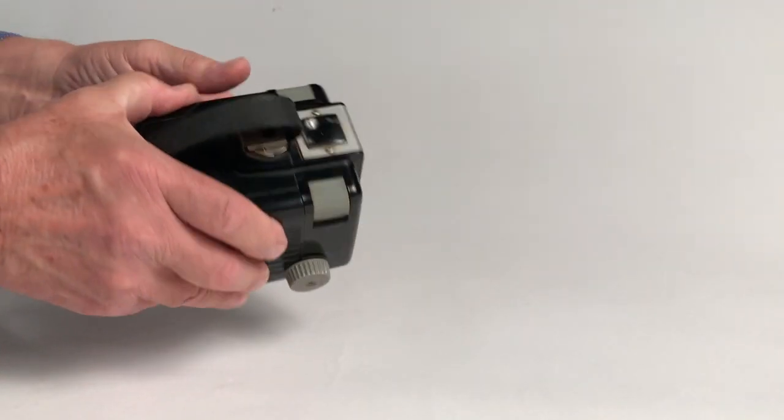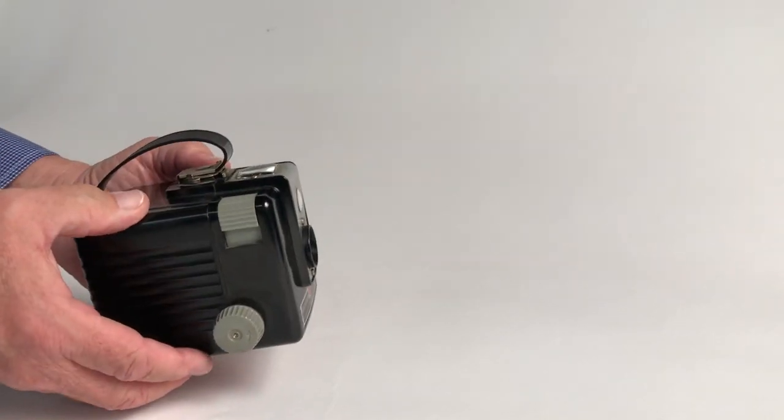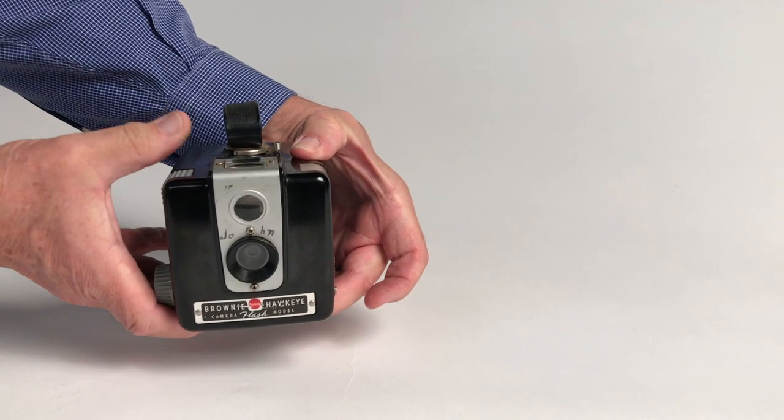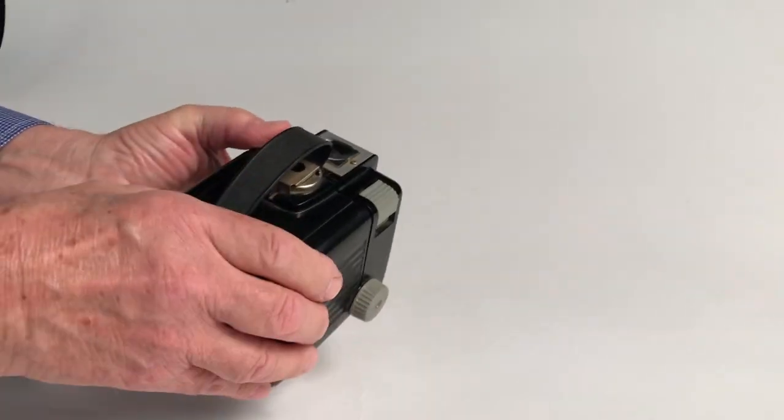That's all there is to it. It had a flash that you could get for it, but we're not talking about that. So you view through here and then take the picture. So to load it, this is a 620.